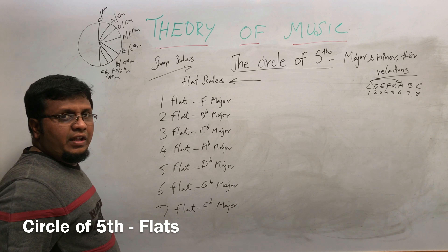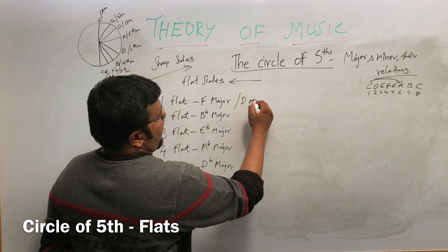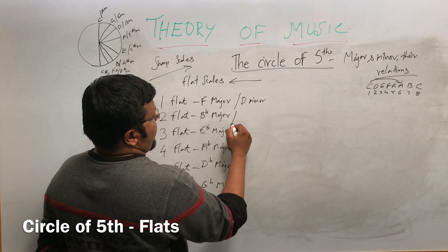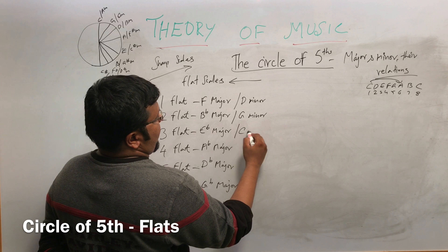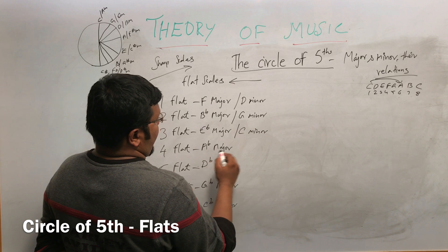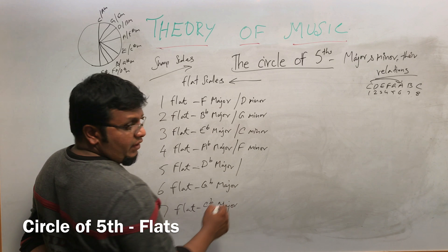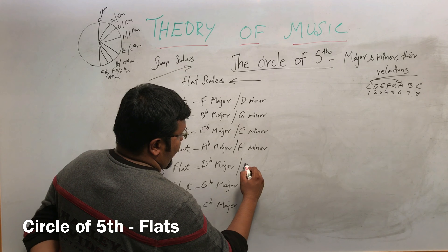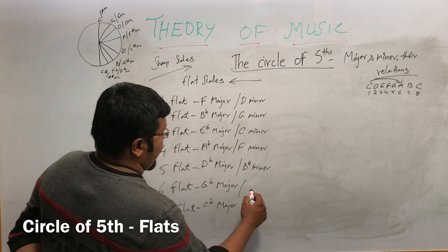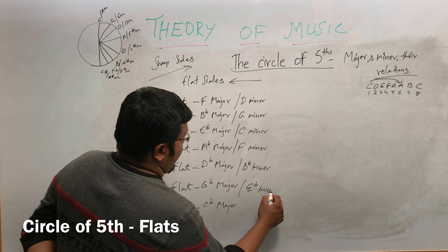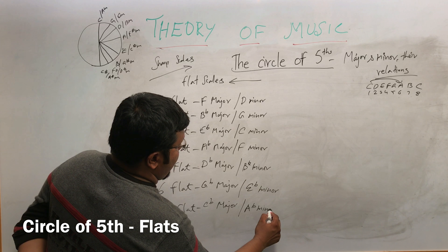Now we are going to learn the relative minor relations for flat scales. F major relates to D minor. B-flat major relates to G minor. E-flat major relates to C minor. A-flat major relates to F minor. D-flat major relates to B-flat minor. G-flat major relates to E-flat minor. C-flat major relates to A-flat minor.